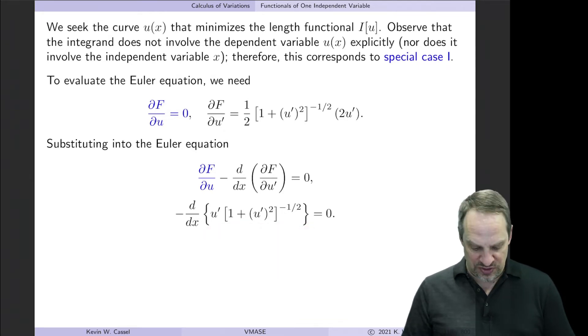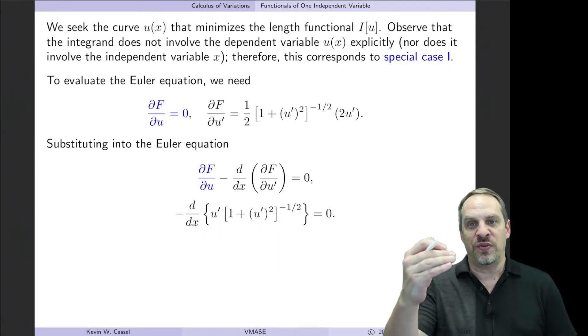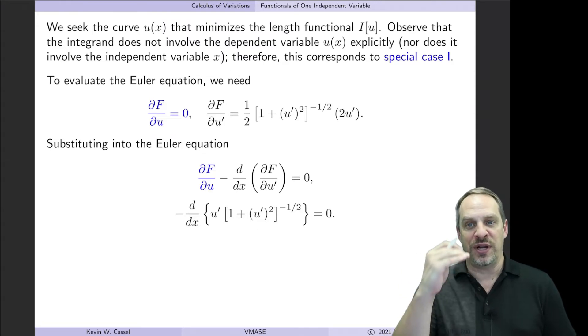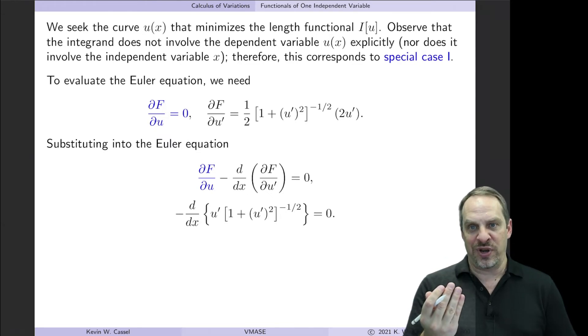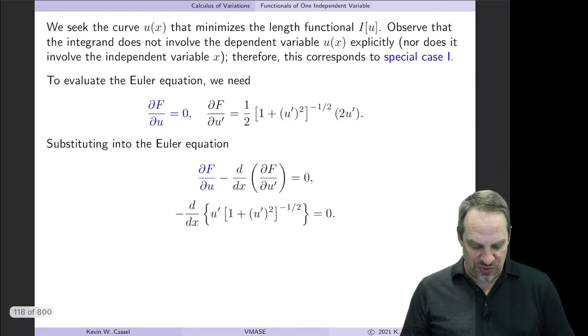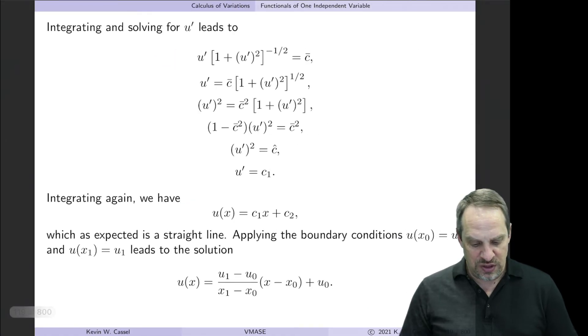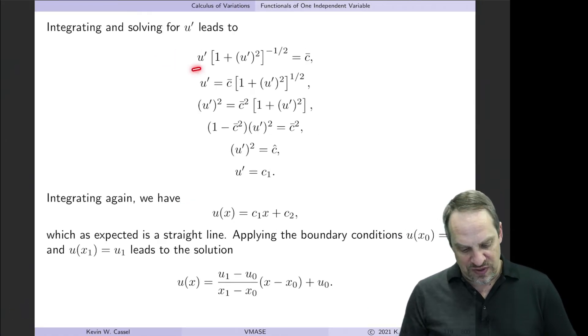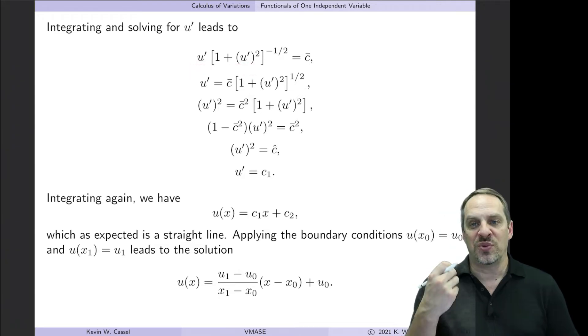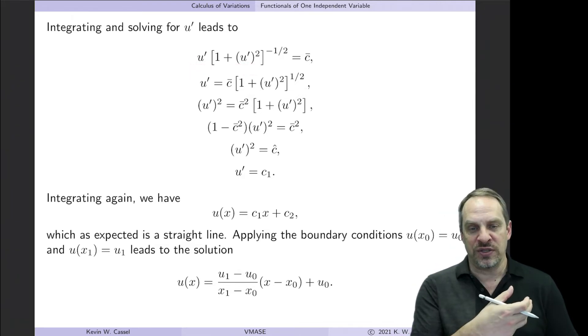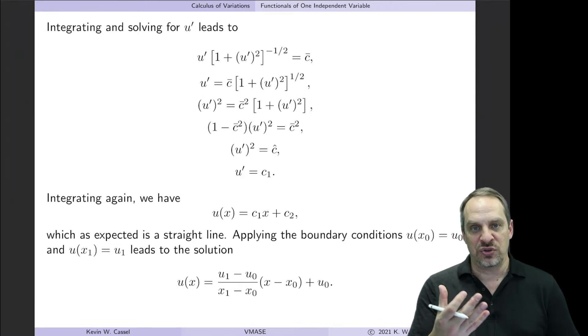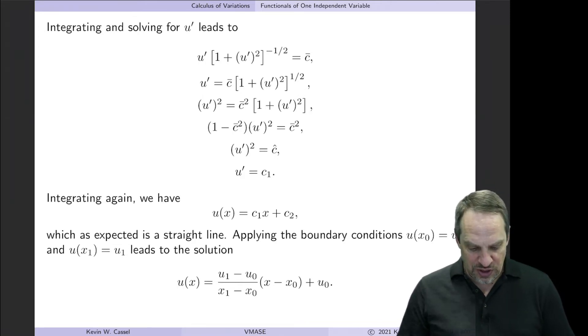So rather than differentiating once and then integrating twice essentially to get the solution of the differential equation, we can go ahead and integrate once right now. I'm going to set this equal to some constant, which is what you see here. Now this looks kind of messy. I've got u primes embedded all over the place. So what I want to do is solve for u prime as a function of x, then integrate once to get the solution u as a function of x. In order to do that, we have to do some algebra.